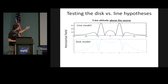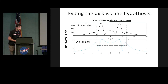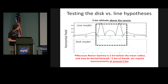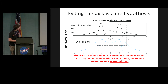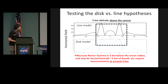To test this, here is the line model on top — the previously published model — and the disk model from this talk. At very low altitudes, about five kilometers above the source, there are significant differences in the field structure. We can actually test these two hypotheses with low-altitude measurements. Reiner Gamma sits two kilometers below the mean lunar radius and may be buried beneath another kilometer of basalt, so a five kilometer measurement becomes a two kilometer altitude above mean lunar radius. To resolve the origin of Reiner Gamma, we need to get into the two kilometer range.